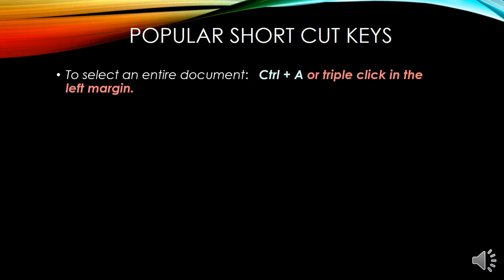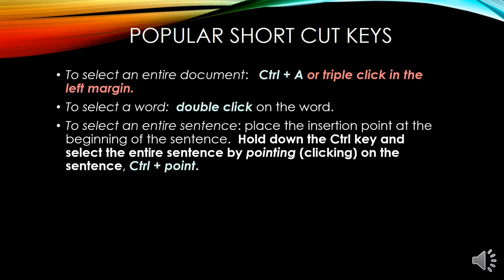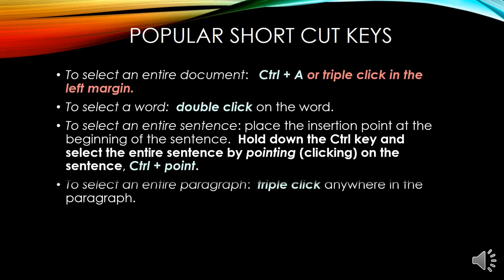Here are some popular shortcut keys. To select an entire document, Ctrl plus A. To select a word, double click on the word. To select an entire sentence, place the insertion point at the beginning of the sentence, hold down the Ctrl key and then select the entire sentence by pointing or clicking on it. The shortcut is Ctrl plus Point.